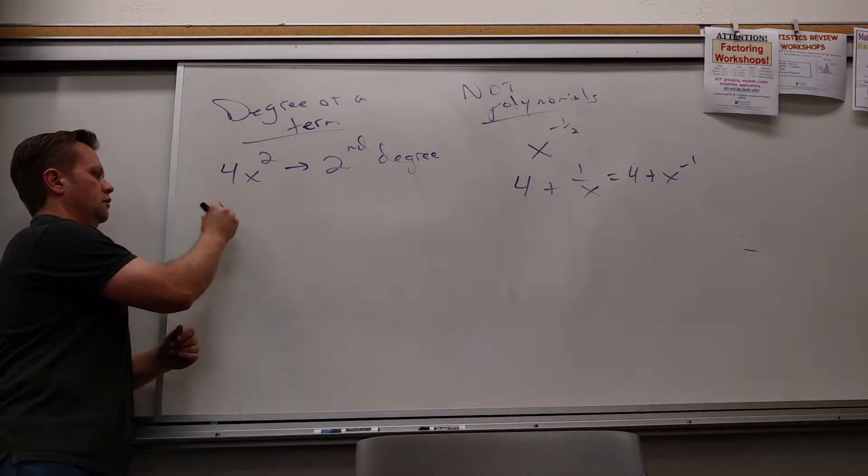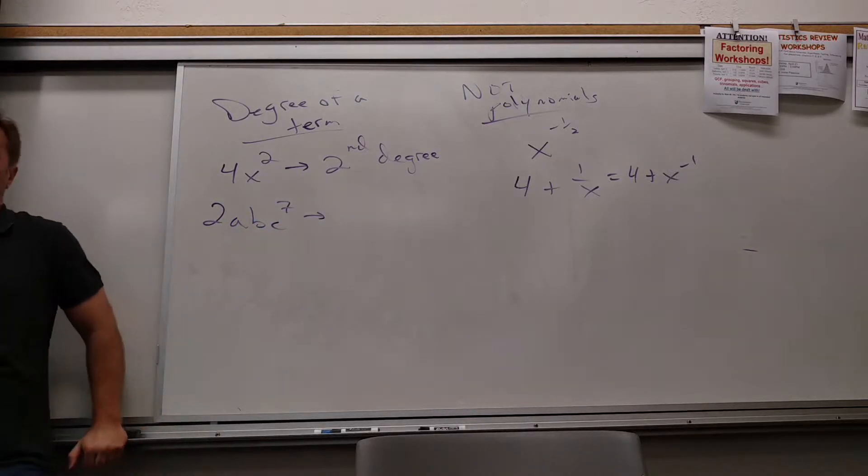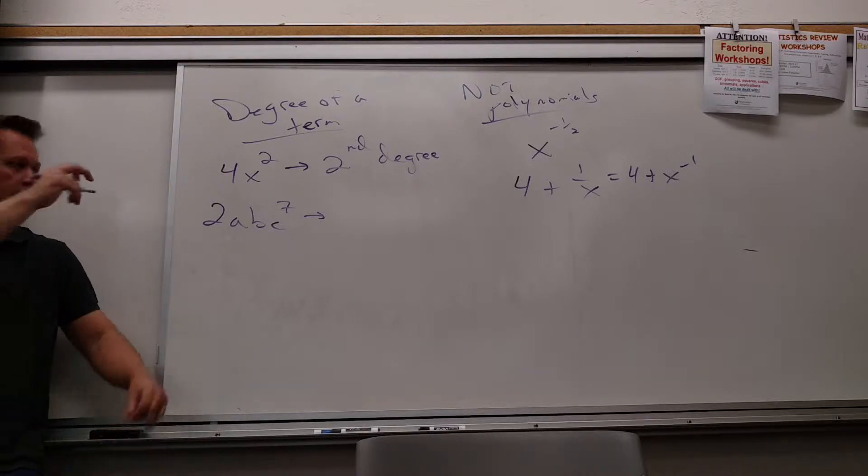So what about this term here? Seven. No? I see seven c's, but is that the total number of letters I see, the total number of variables? How many total variables? Nine. It's a ninth degree. Black belt. A ninth degree monomial, if you want to be very specific.